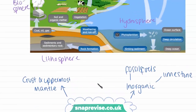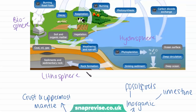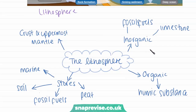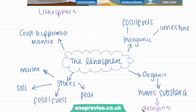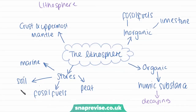The lithosphere comprises the crust and the upper mantle. This is where we find carbon in its inorganic form — in fossil fuels and in limestone. We can also find it in smaller quantities in its organic form in humic substances, which is simply decaying material — where living material dies, decays, and the carbon is cycled back into the rock. Within the lithosphere, carbon is stored in fossil fuels such as coal, oil, and gas; in soil; in peat; and in marine sediments and sedimentary rocks at the bottom of the ocean.